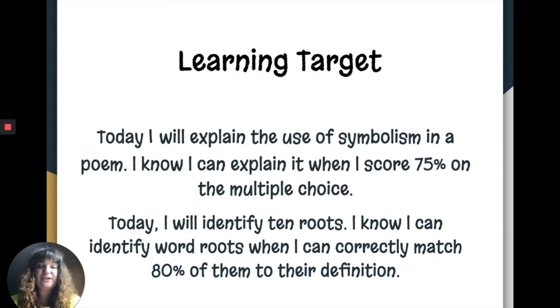As I mentioned we have two learning targets. Today I will explain the use of symbolism in a poem, The Road Not Taken by Robert Frost. And I know I can explain it when I score 75% on the multiple choice. The second part is today I will identify 10 roots. I know I can identify word roots when I can correctly match 80% of them to their definition.